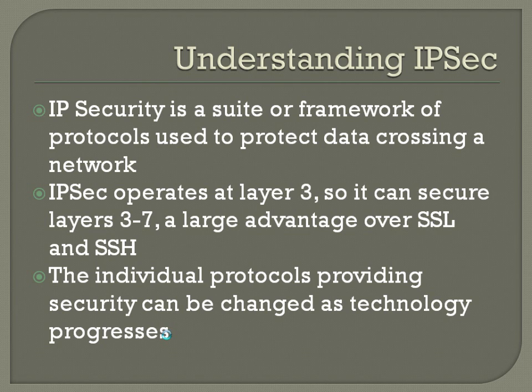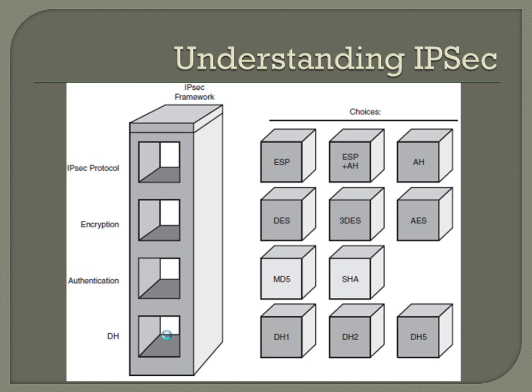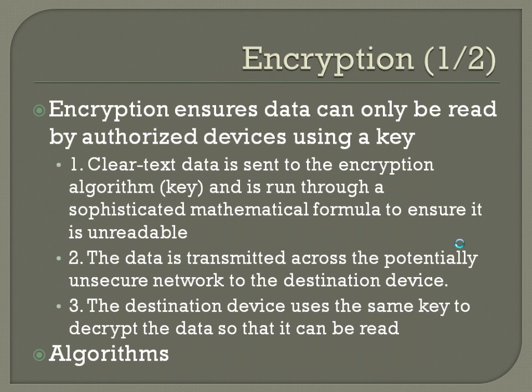Here's a large overview — we'll go into each of these individually. IPsec itself is the framework for how this works, and you'll have a certain IPsec protocol that fits in there. You can put any of the individual protocols for encryption, authentication, or Diffie-Hellman in there to handle the smaller tasks. Encryption ensures data can only be read by authorized devices using a key. Clear text data is sent to the encryption algorithm, run through a sophisticated mathematical formula to ensure it's unreadable, then transmitted across the potentially unsecured network. The destination device uses the same key to decrypt the data so it can be read.